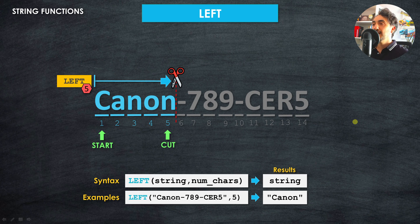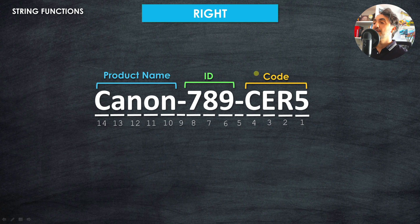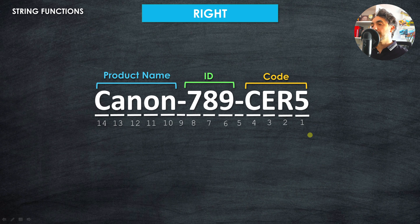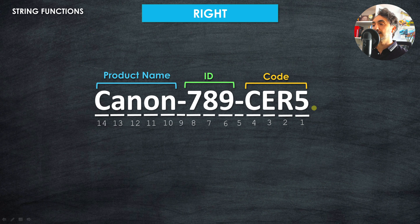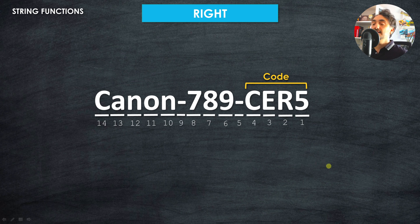Now let's move to the RIGHT function, which works in exactly the opposite way. If we want to extract the product code — the last four characters of our string — we use RIGHT. The position numbers count from the right side moving to the left, so the first character is '5', the second 'R', the third 'E', and the 14th character is 'C'.